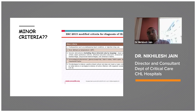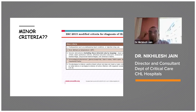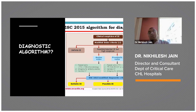My suggestion would be to go back on the net and go back to your books and look at the criteria — going through them repeatedly would help you in memorizing them faster. This is the algorithm for diagnosis of infective endocarditis: you have a clinical suspicion, and you apply the modified Duke's criteria.